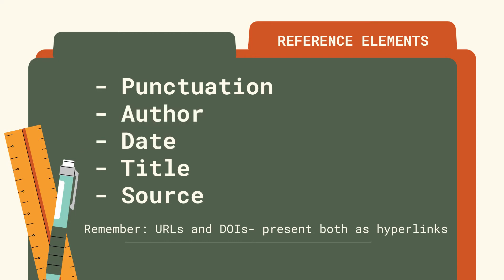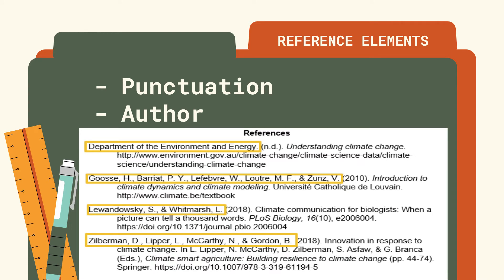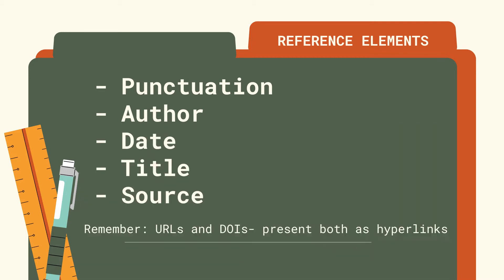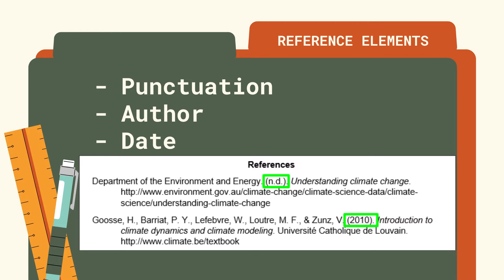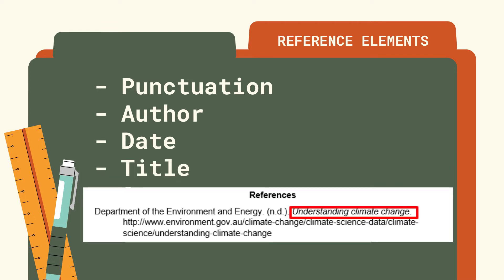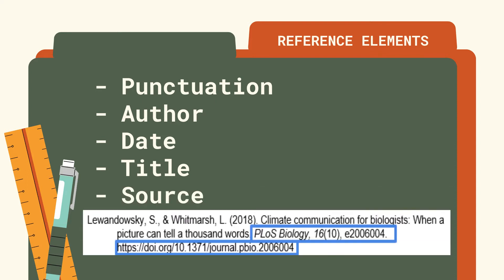Then, identify the author — the person or group responsible for creating, writing, or editing the content of a work. Also, look for the date your source was published, and then the title of the work being cited. It can be from a standalone book, journal, website, or report, or it can be from a part of an article or chapter. Lastly, the source — it is where readers can retrieve the work cited. It can be from a journal, website, or a publisher.